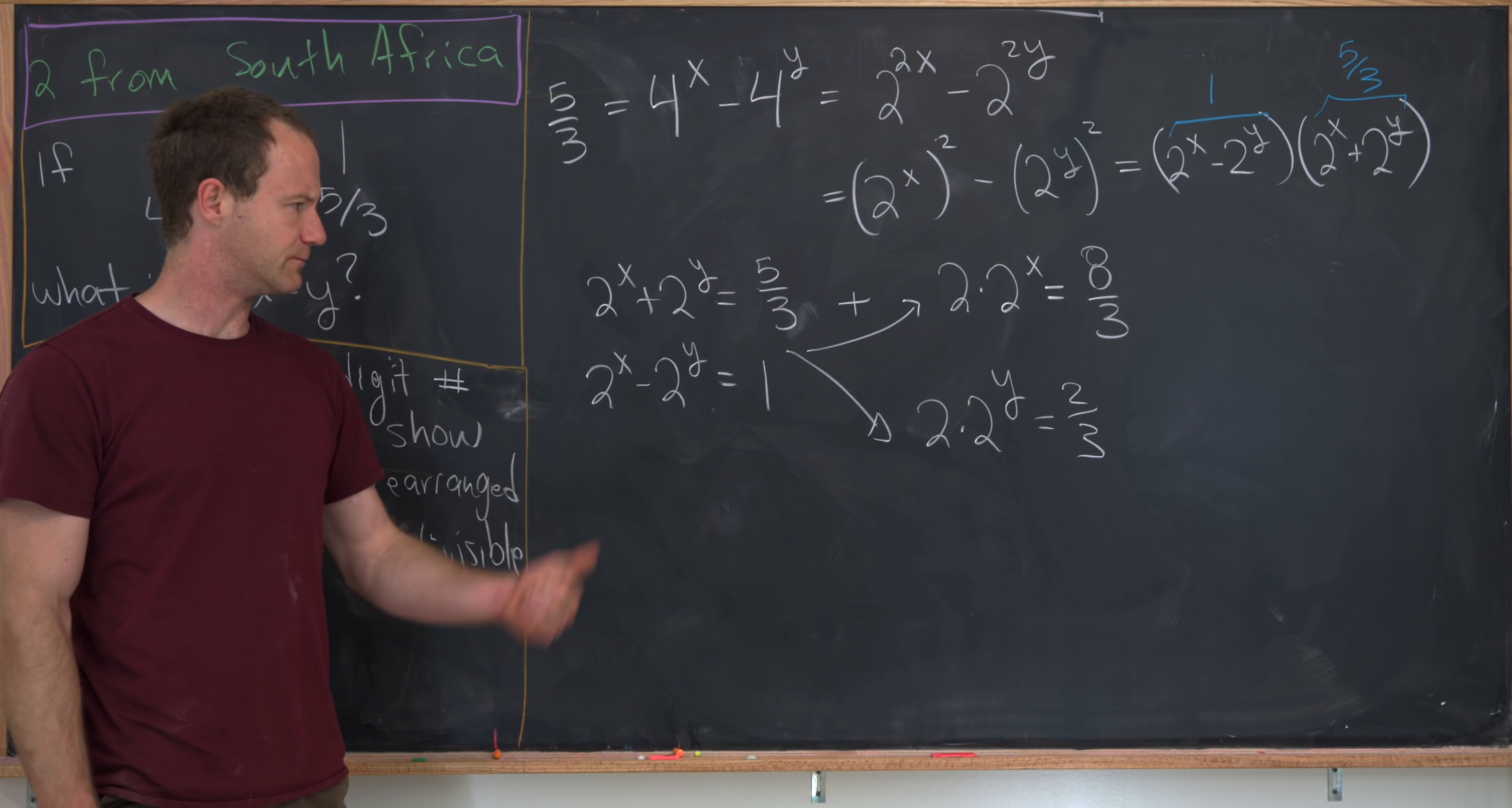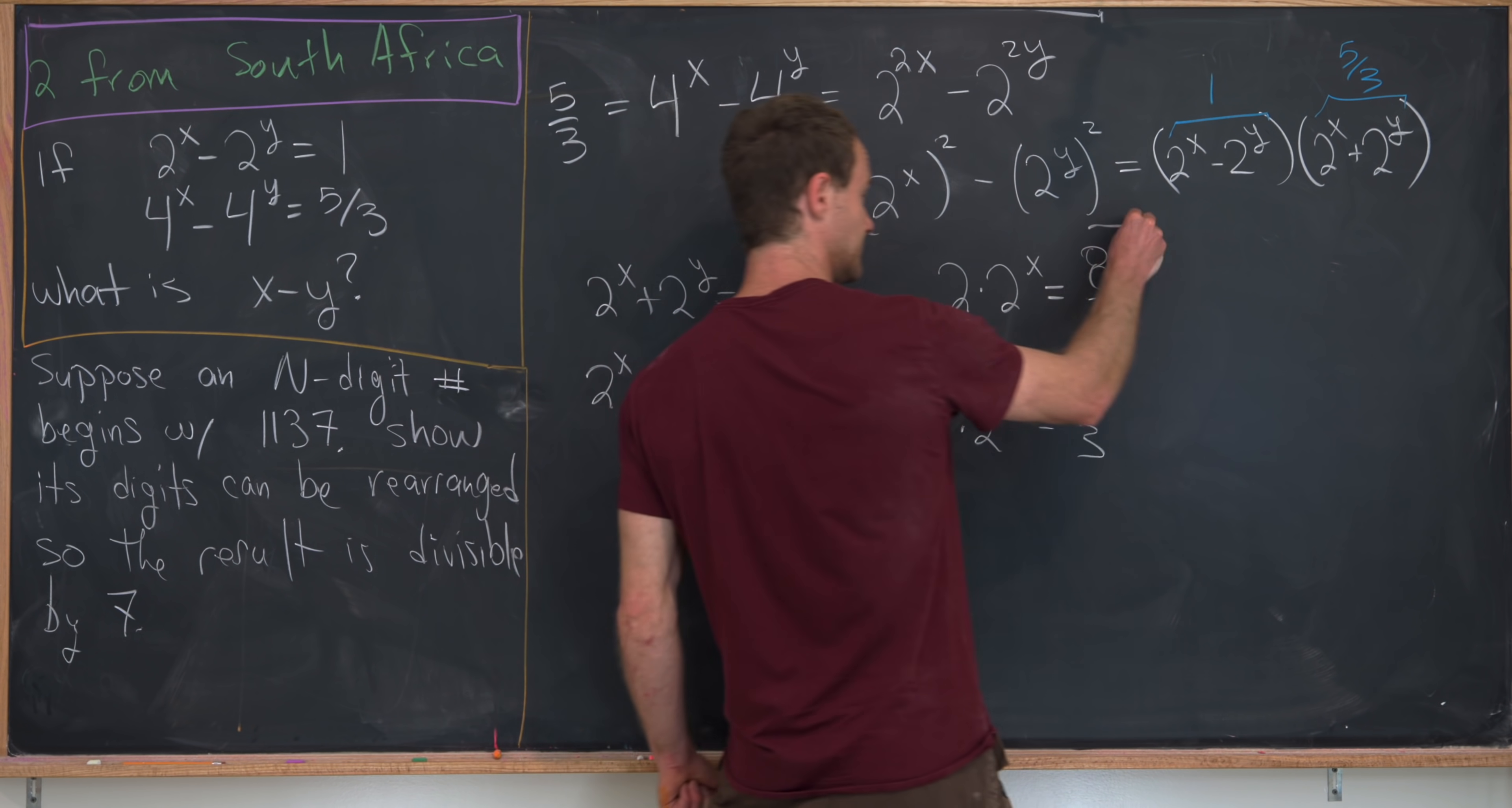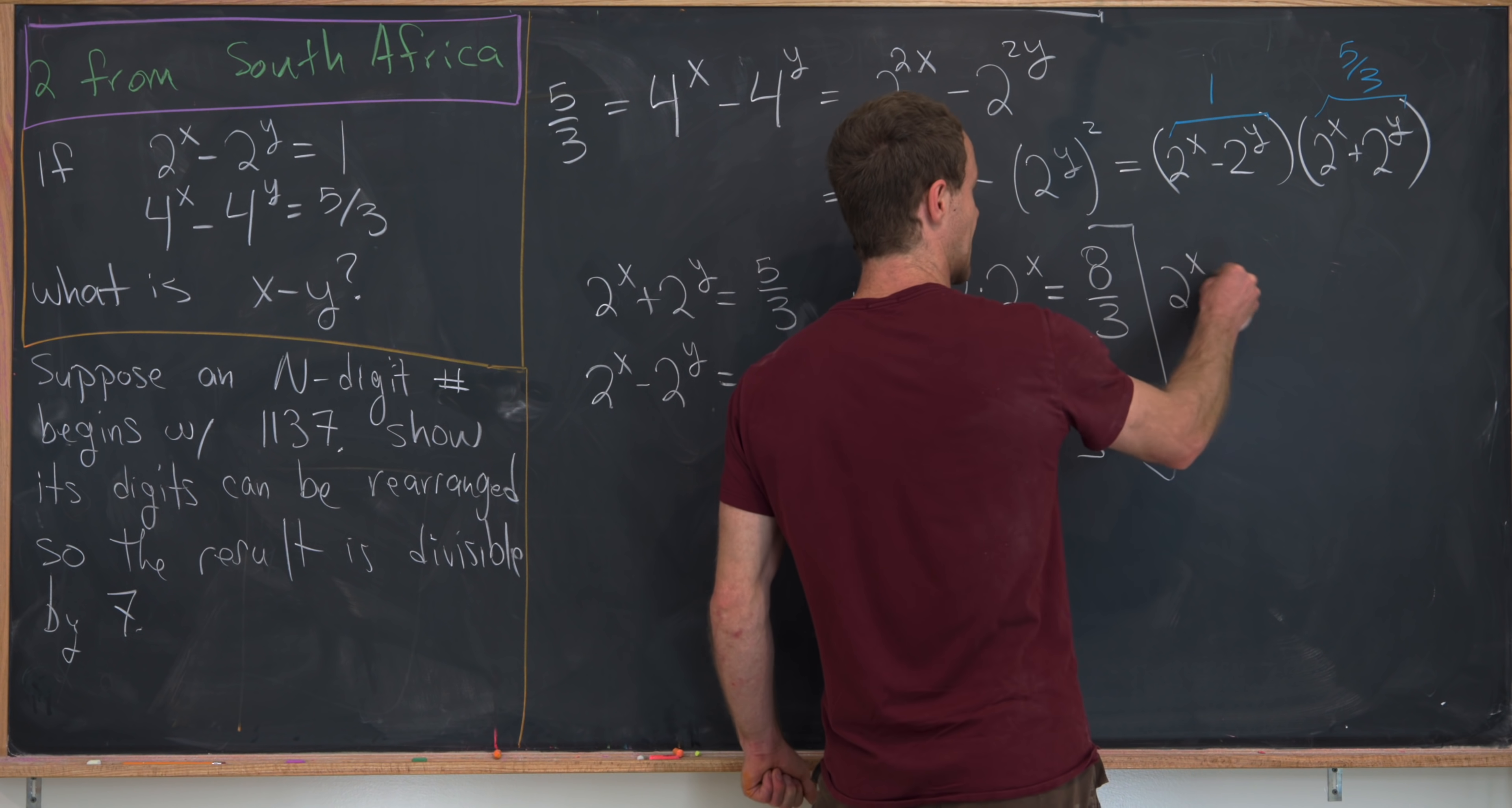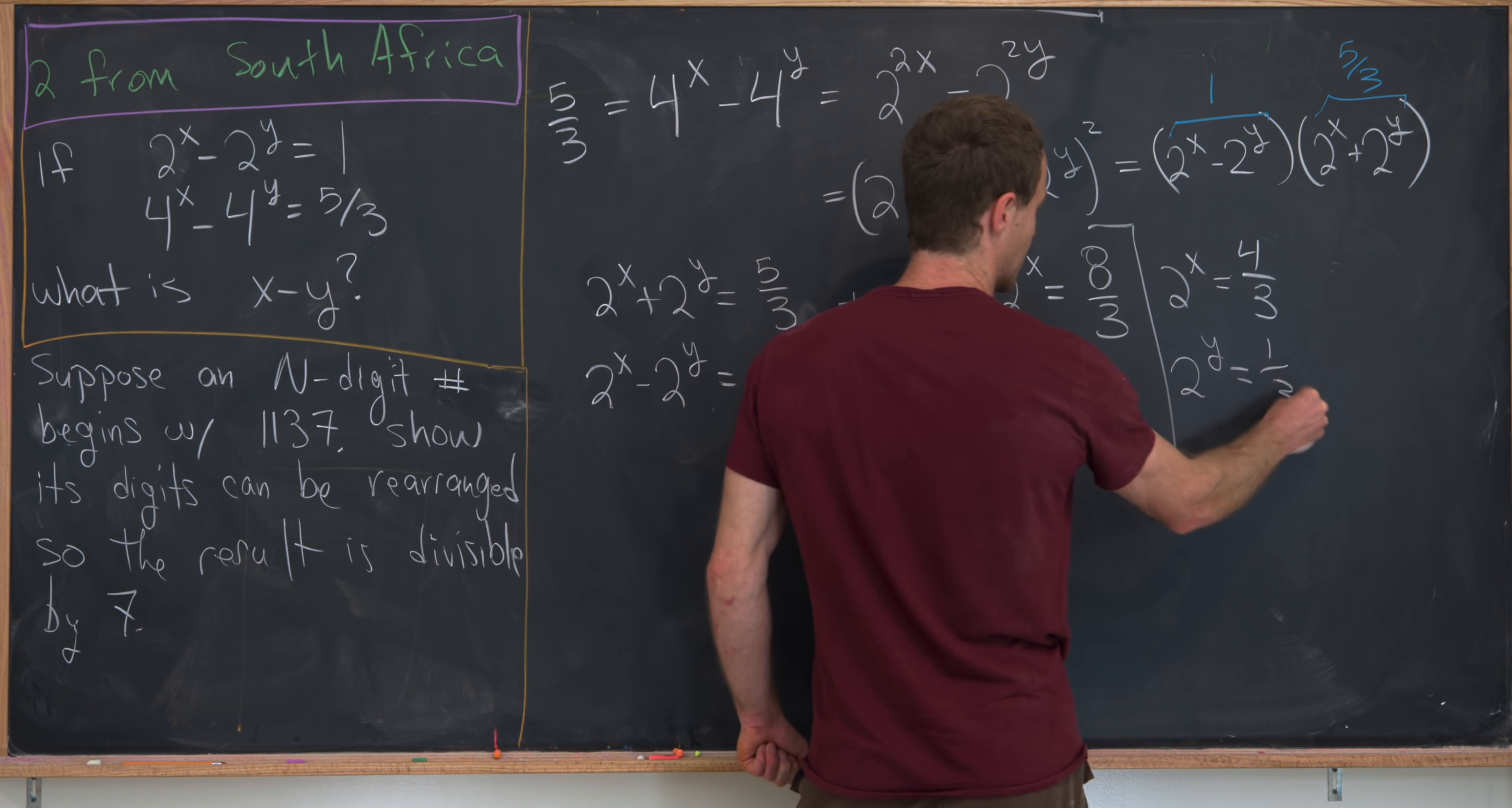But now we can divide both sides of each of these equations by 2. And we'll see that we get 2 to the x is 4 over 3, and then 2 to the y is 1 over 3.